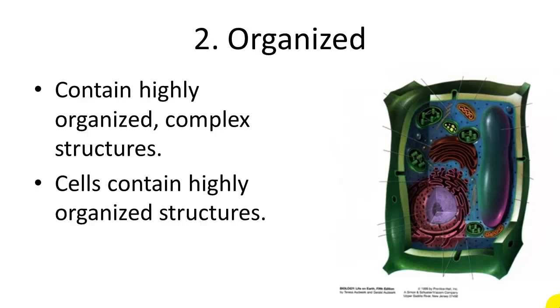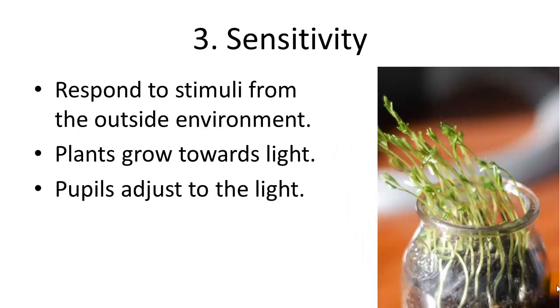The second characteristic of living things is that they're organized. Living things contain highly organized, complex structures called cells. And inside these cells are little, tinier structures called organelles. And then those organelles are made up of very organized little molecules. So as you can see, there's an increased level of complexity in a living thing.